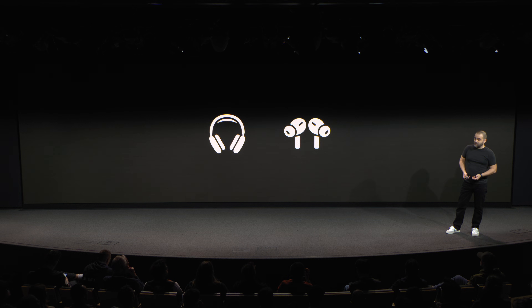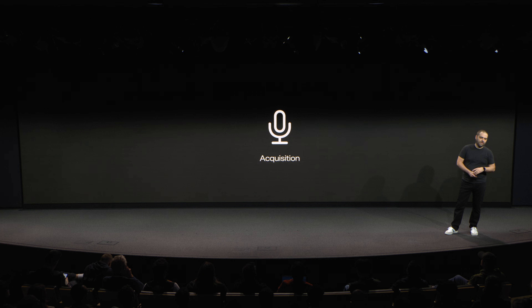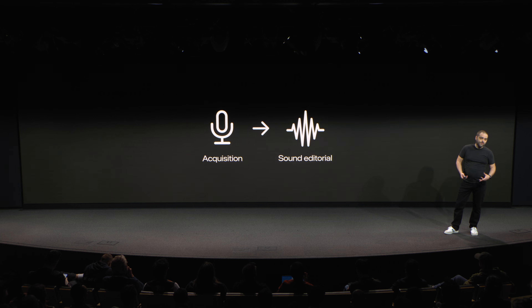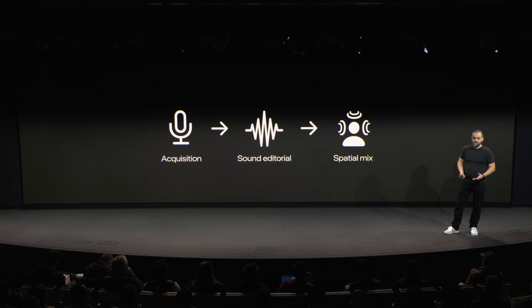Consumers can also use headphones or even just the built-in speakers on Apple Vision Pro. So with the sales pitch out of the way, how do we actually do it? Let's take a bird's eye view of our workflow. Our journey begins with acquisition, meaning recording audio on set. From there, we travel to post, specifically sound editorial, where you assemble and layer all of your sound elements. And finally, there's the spatial mix, where all the sonic elements come together.